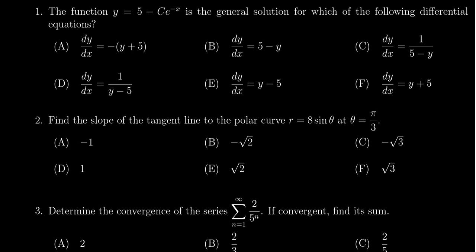Let's take a look at the solution to question one from the final exam for our course math 1220. The function y equals 5 minus c times e to negative x is the general solution for which of the following differential equations?